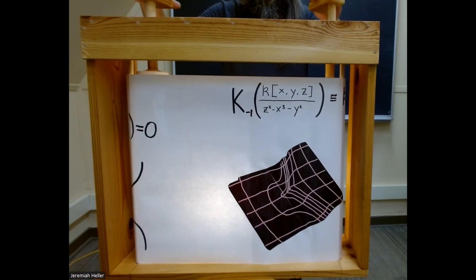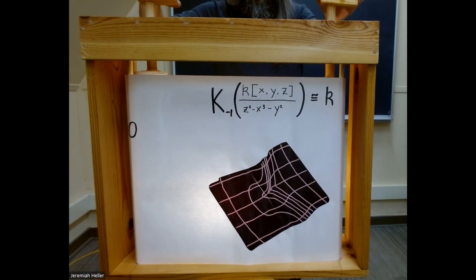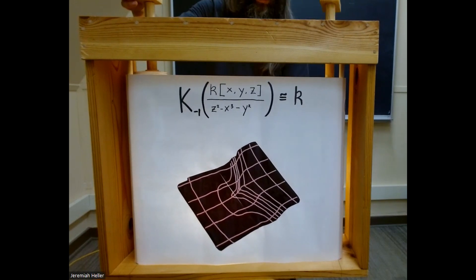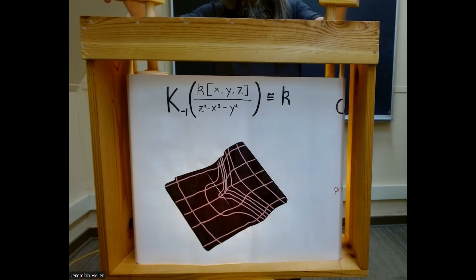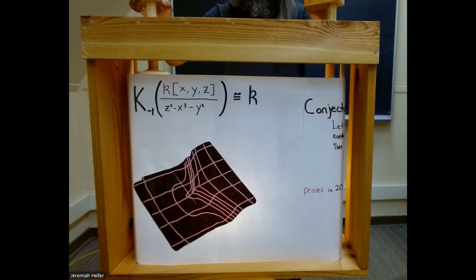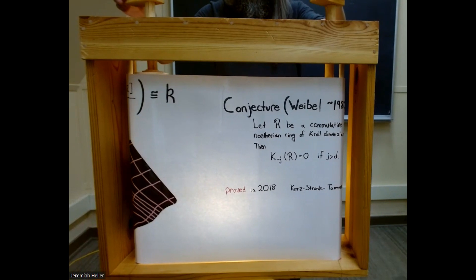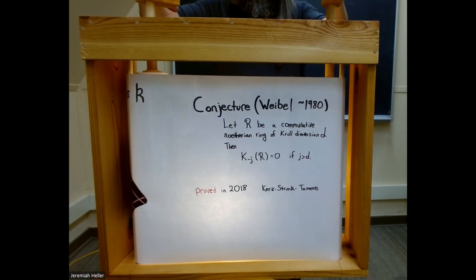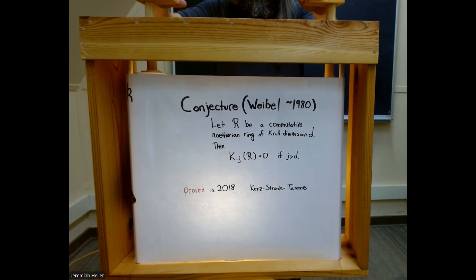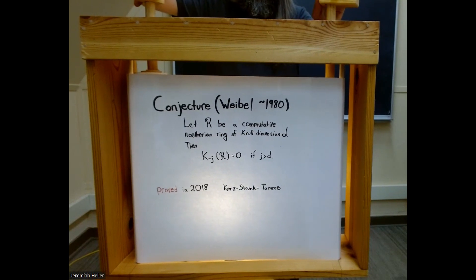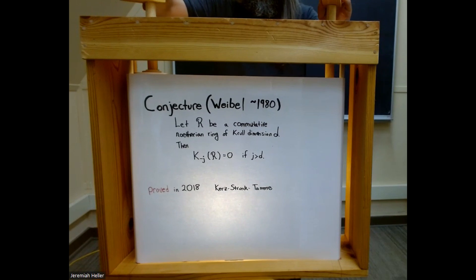But there is a limit to how many of these K-groups can be non-zero. For normal surfaces, Weibel computed that the only negative K-groups which can be non-zero are K-minus-1 and K-minus-2. This was a special case of an important conjecture about negative K-groups. The conjecture, due to Weibel, was that once you drop below the negative of the dimension of the ring, then your negative K-theory is actually zero. Progress on this conjecture was made slowly over several decades, and it was finally resolved in 2018 using methods from derived algebraic geometry.